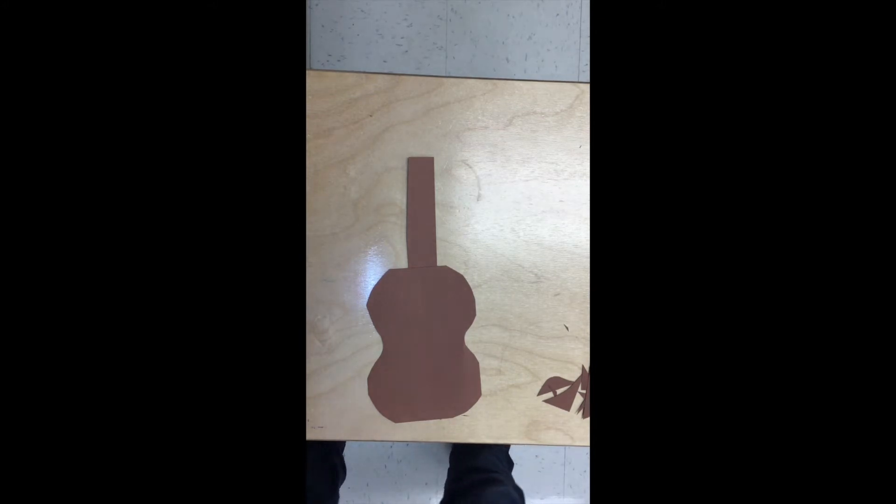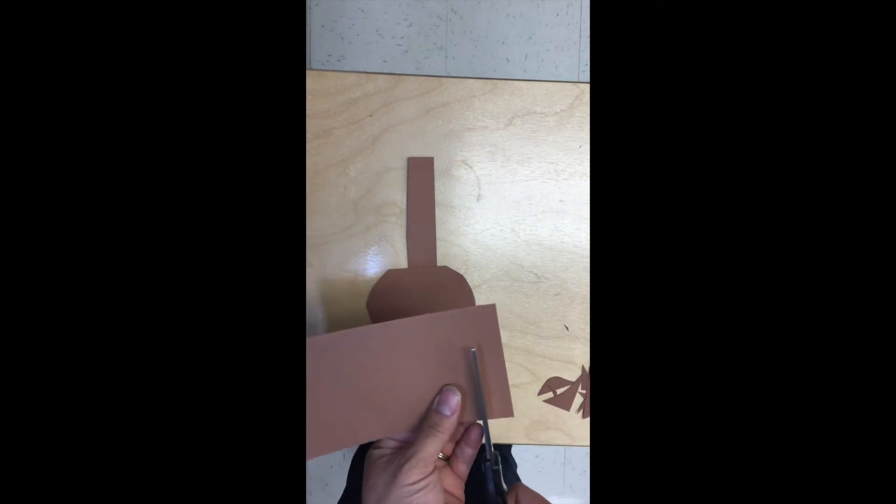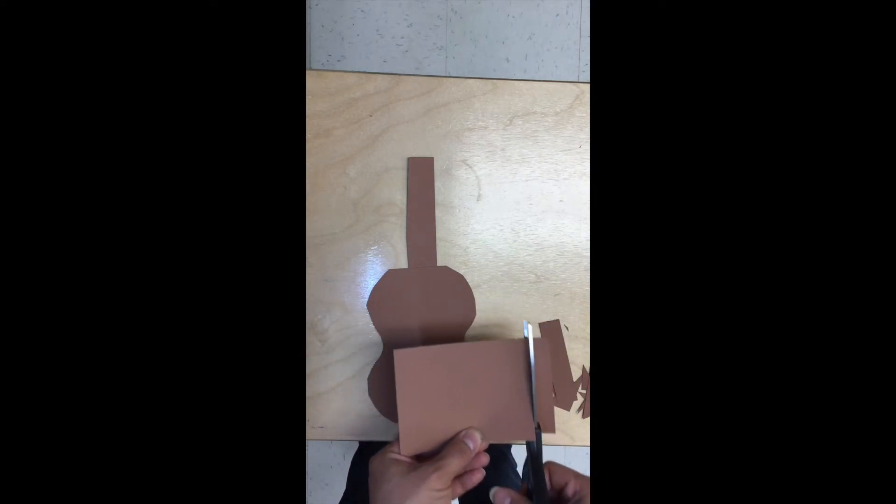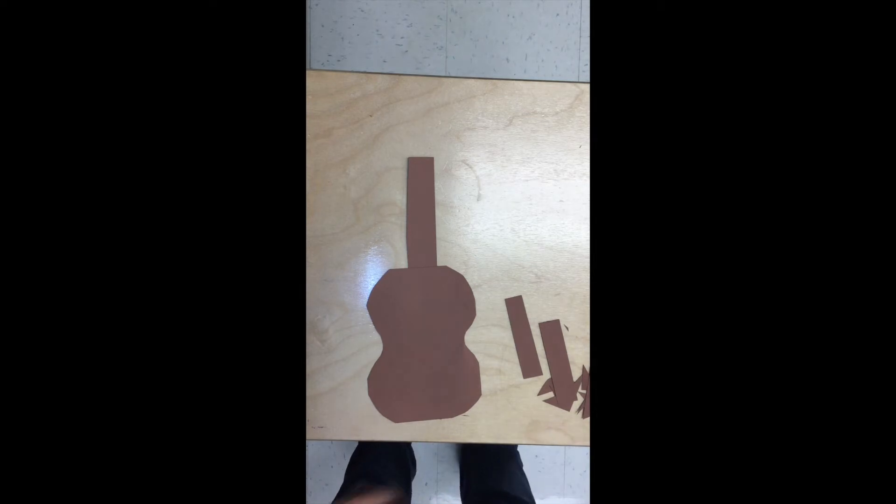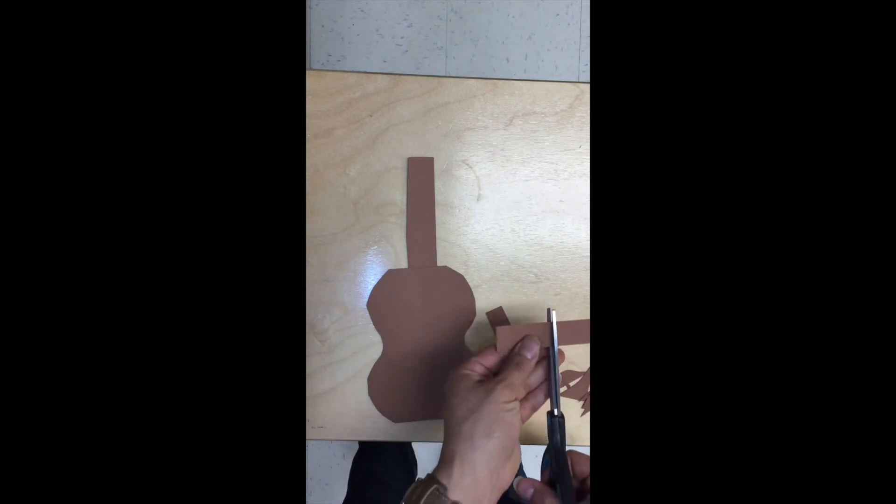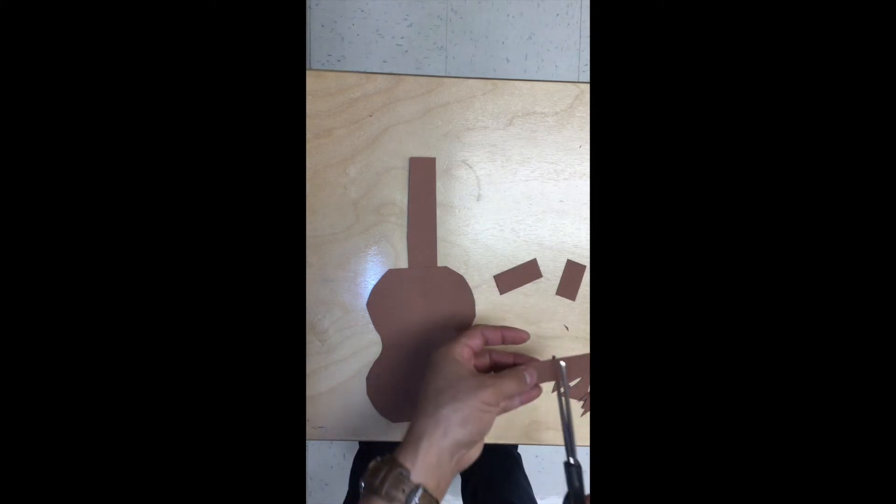Now next will be the head. For the head, we are going to cut some small rectangles which will be the knobs that we turn to tune the strings. Remember, this is an abstract guitar so you can make as many knobs as you like.